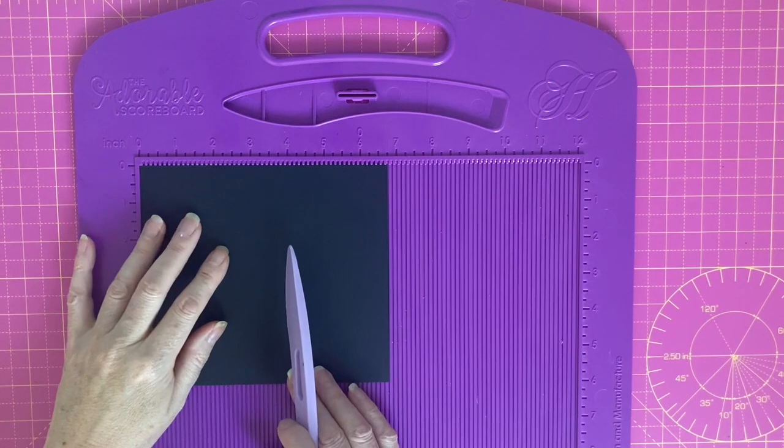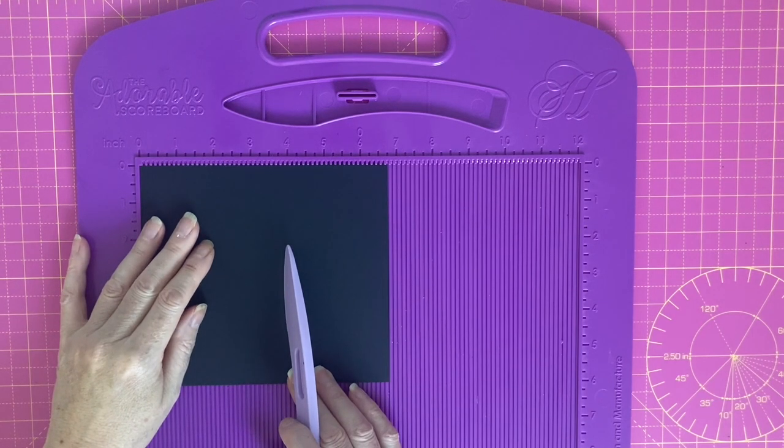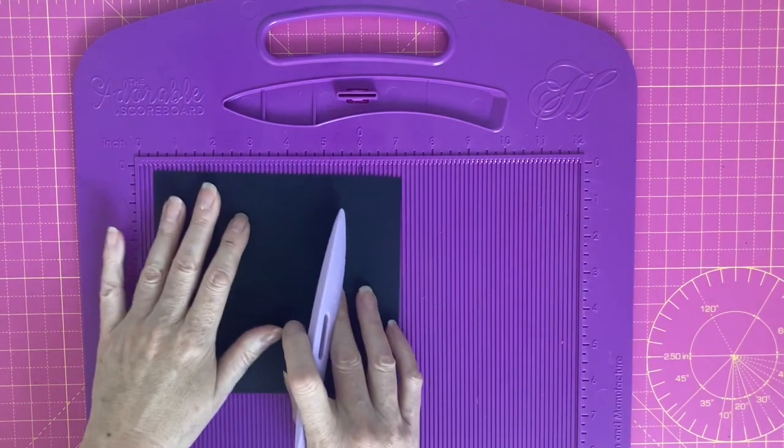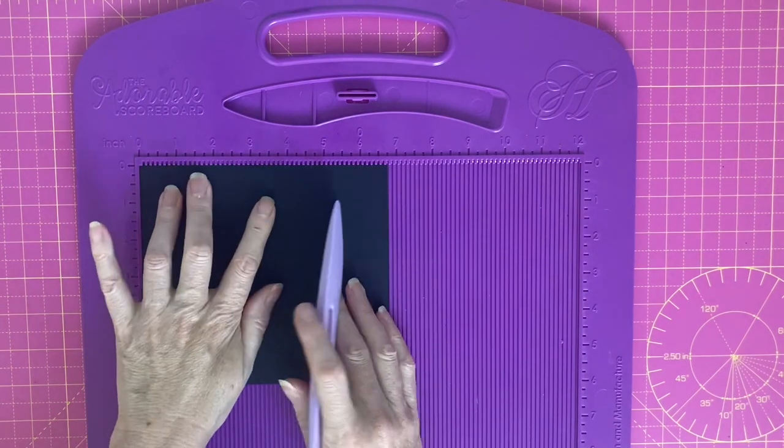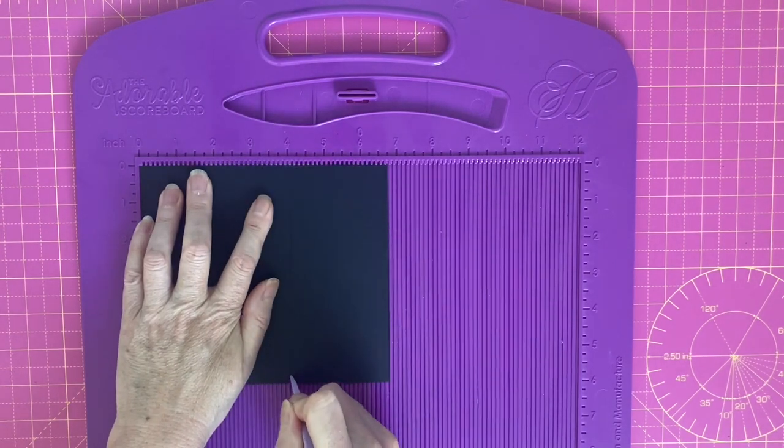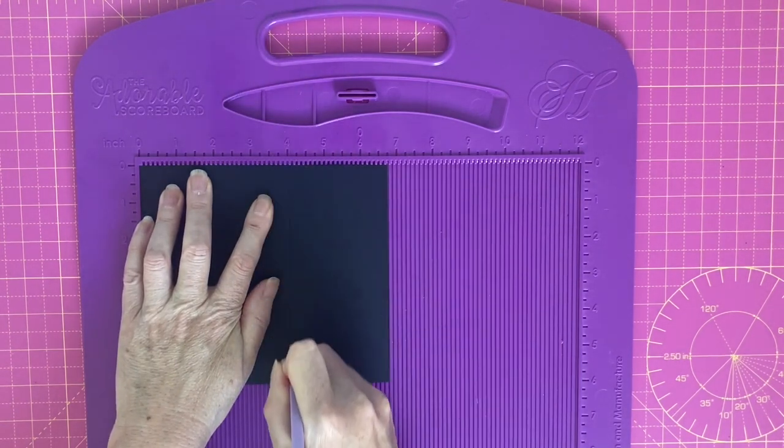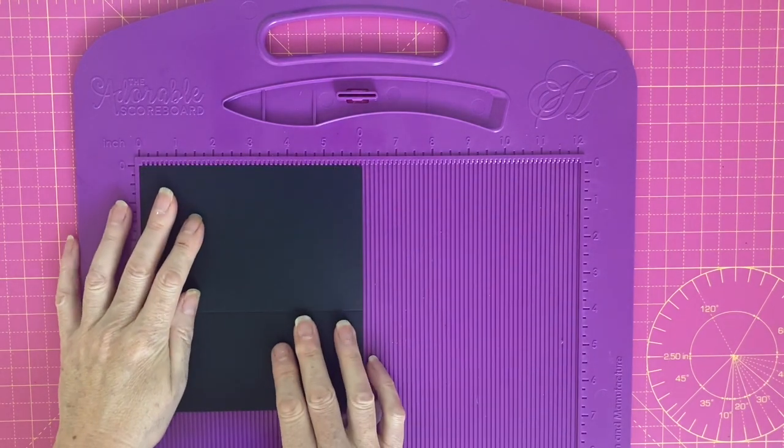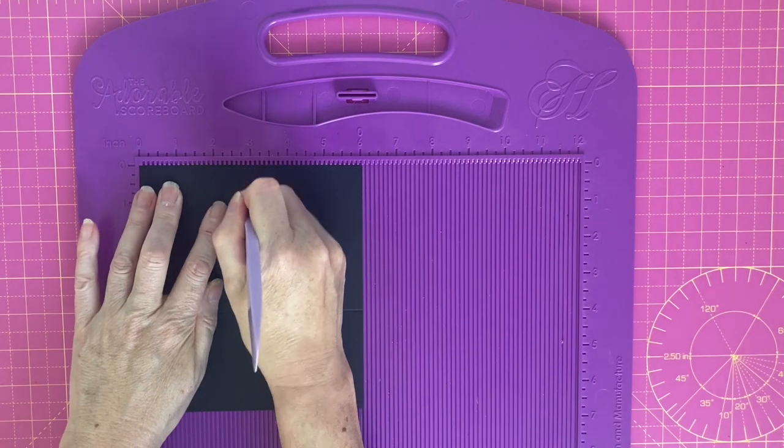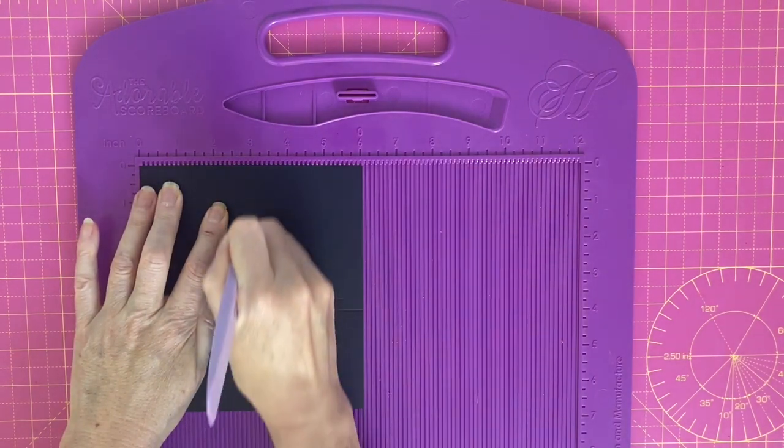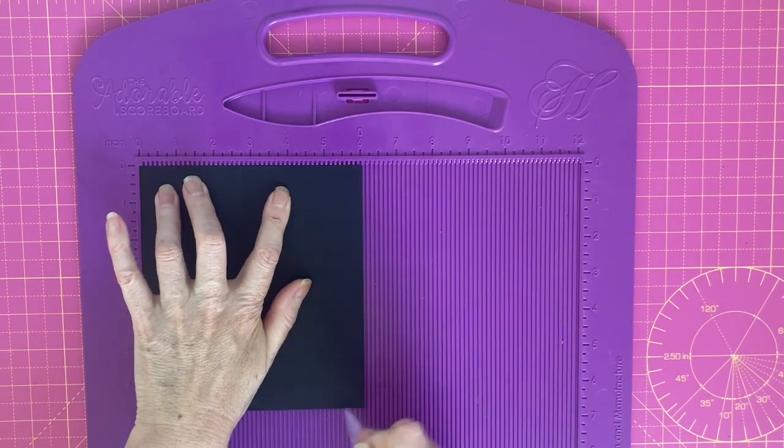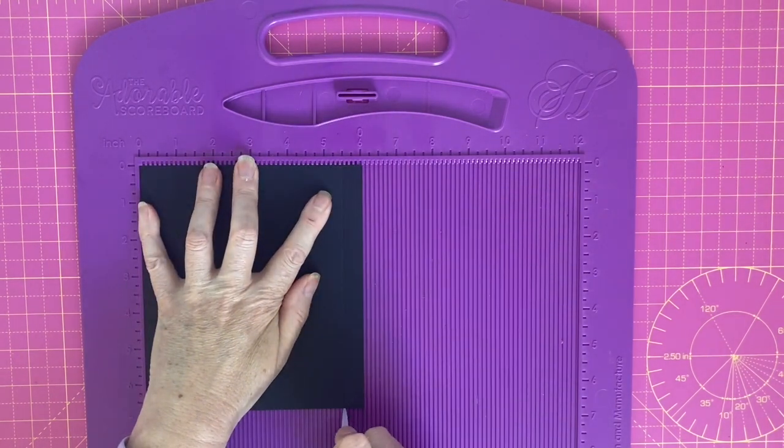For our box base we need two pieces which measure six and three quarters by six inches. Along the six and three quarter inch side we're going to score at four inches. Along the six inch side we're going to score at two and three quarters and five and a half, and we're going to do this on two pieces of cardstock.